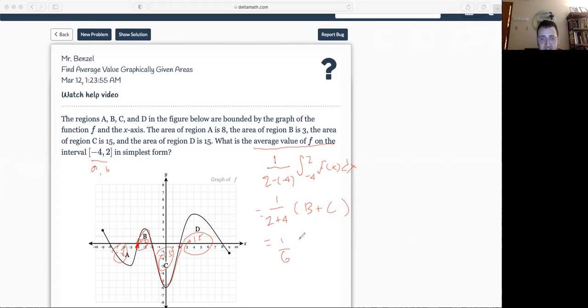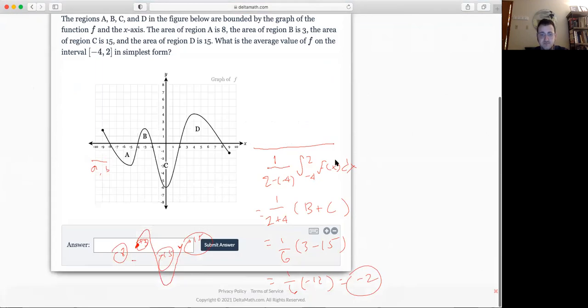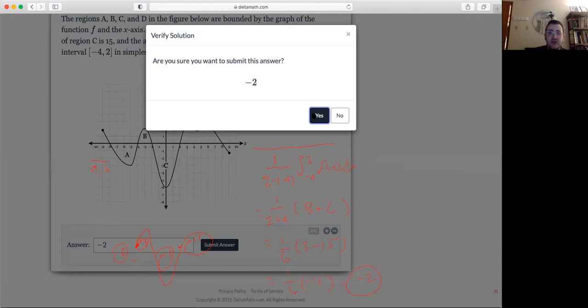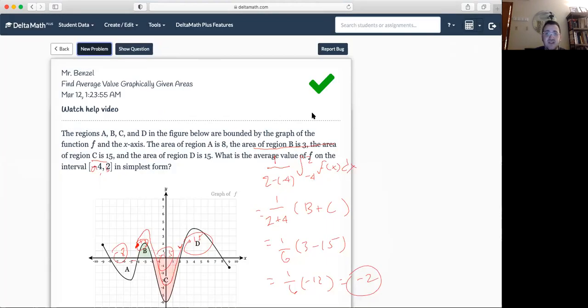So then you're going to get 1/6 times 3 minus 15. So I got 1/6 times negative 12, and negative 12 divided by 6 is just going to be negative 2. So that makes about sense. So you'll have a few of these graphical average values just to kind of warm you up.